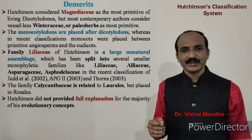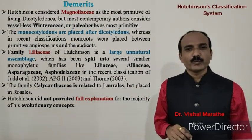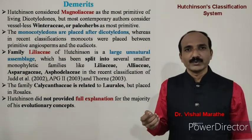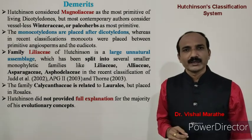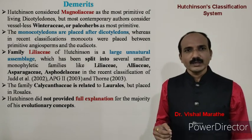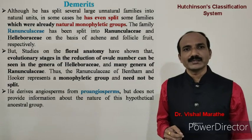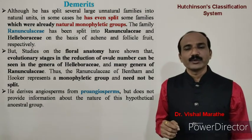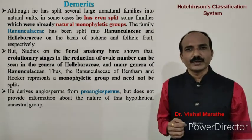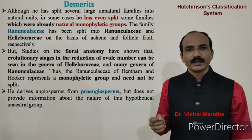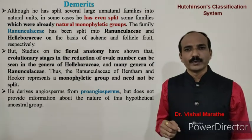Another important drawback is that the family Calycanthaceae is related to laurels but was placed in Rosales by Hutchinson. Hutchinson did not provide full explanation for the majority of evolutionary concepts used in the classification system. Although he split several large unnatural families into natural units, in some cases he even split families that were already natural monophyletic groups. For example, Ranunculaceae was split into Ranunculaceae and Helleboraceae on the basis of achenes and follicle fruits respectively, but studies on floral anatomy have shown that various stages in reduction of ovule number can be seen across genera of both groups.